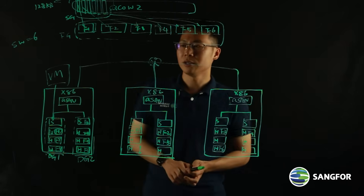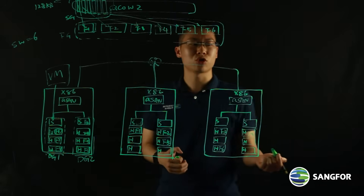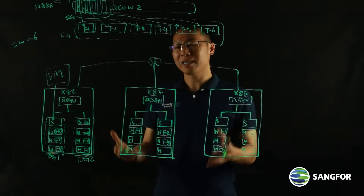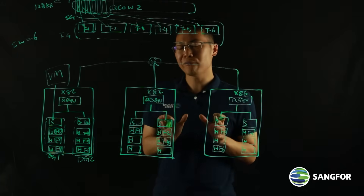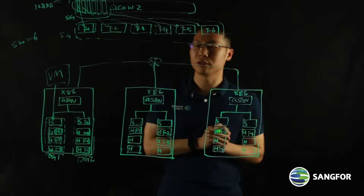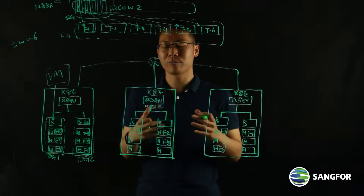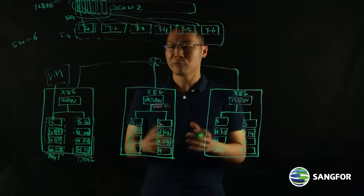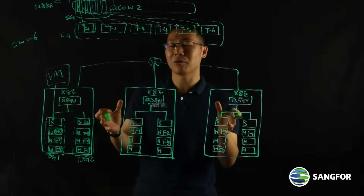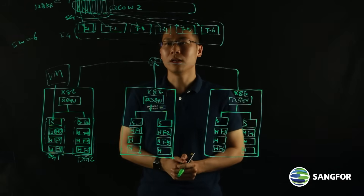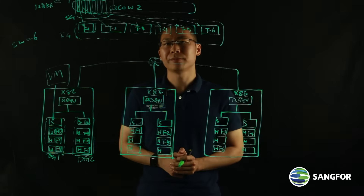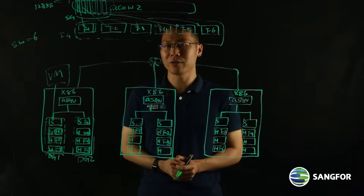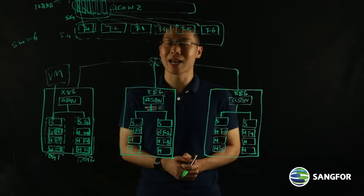We have done testing, and with this architecture we are able to achieve on average 50% more IOPS when you compare Sanford HCI to other vendors' HCI solutions. It provides great IOPS and impressive throughput from the storage architecture based on ASAN. If you want to know more about Sanford storage technology with our ASAN distributed architecture, please visit our official website. Thank you.